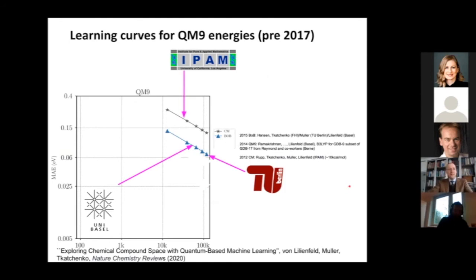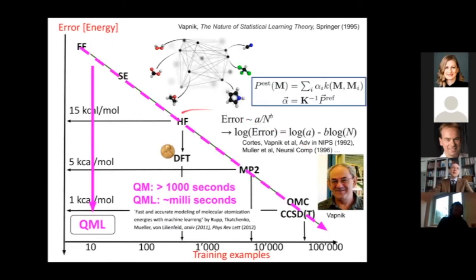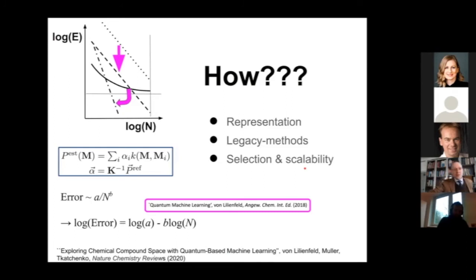This pink error is quite accurate - this is how it should look if your error and your training set size is being logarithmized. We've spent a lot of time exploring how can we improve the offset of such learning curves, how can we improve the slope, how can we avoid models that cease to learn. I cannot tell you everything about that, but I'd like to briefly give you a glimpse on what is the impact on the functional form of the representation you pick for your compound.